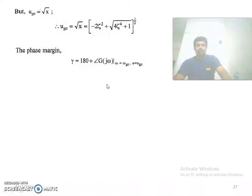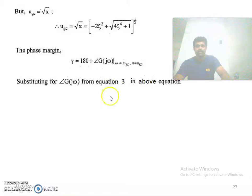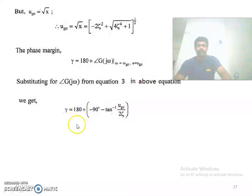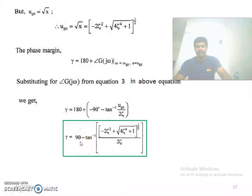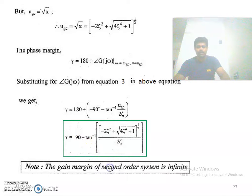Phase margin is 180° + angle of G(jω) at ω = ω_gc. Substituting the angle from equation 3, we get phase margin = 180° + (−90° − tan⁻¹(u_gc / 2ζ)). Substituting the value of u_gc, the phase margin = 90° − tan⁻¹([−2ζ² + √(4ζ⁴ + 1)]^(1/2) / 2ζ).